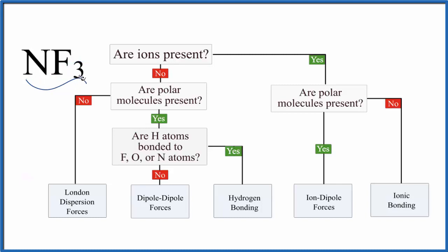So the first thing we need to do is figure out whether there are any ions present. As we look at NF3 here, we can see nitrogen and fluorine are both non-metals. So we have covalent bonds, so we're not going to have any ions present. And there's no negative or positive charge after it either, so no ions are involved here.